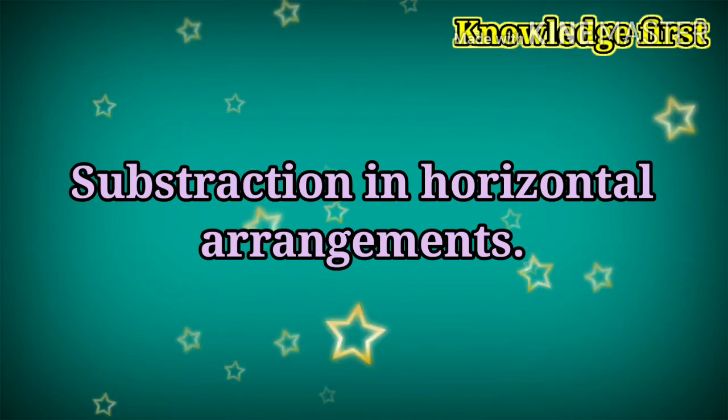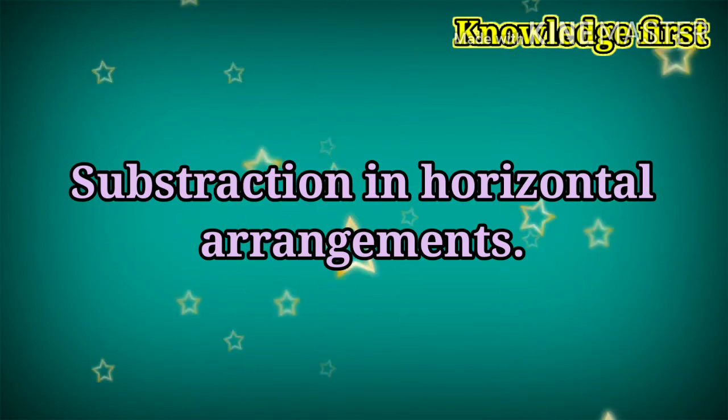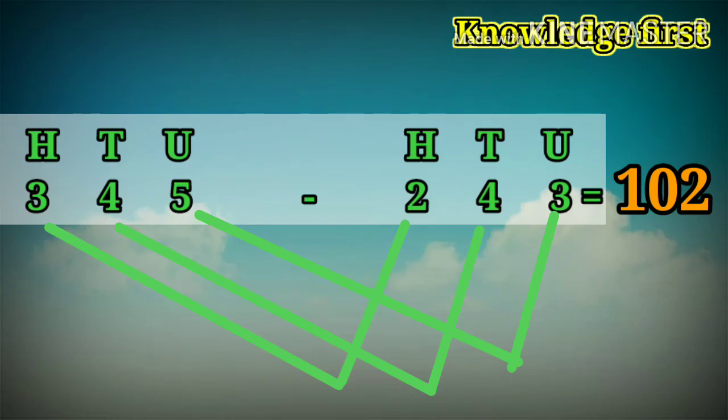Subtraction in horizontal arrangements. 345 minus 243. Start from unit place. 5 minus 3 is equal to 2. Tens place, 4 minus 4 is equal to 0. And hundreds place, 3 minus 2 is equal to 1. Answer is 102.